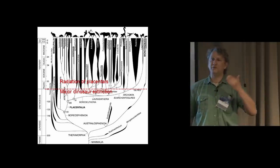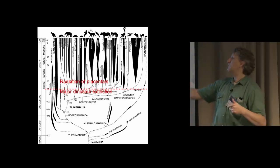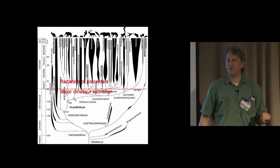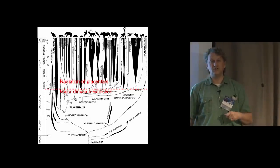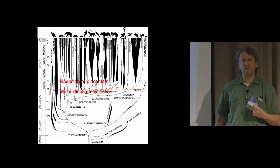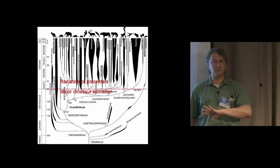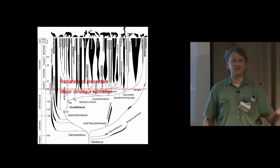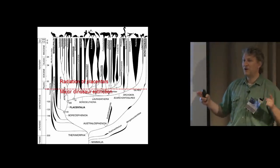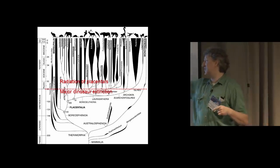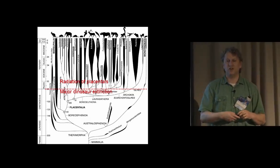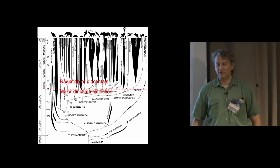I found out that the term 'adaptive radiation' was coined in the context of mammal diversification after the dinosaurs. Lots of textbooks talk about Darwin's finches, or the prickly pears on the Galapagos, but the term 'adaptive radiation' wasn't used until Osborne talked about the radiation of mammals after the end of the age of dinosaurs.